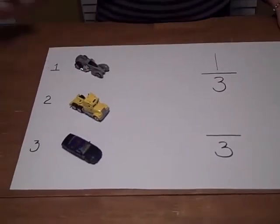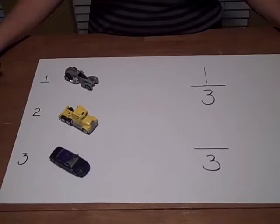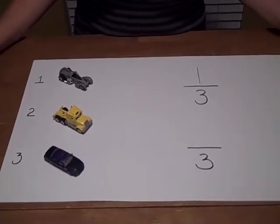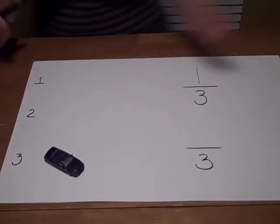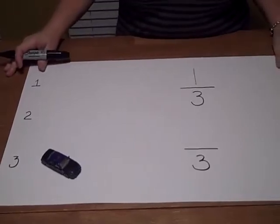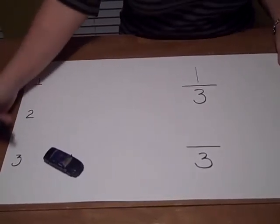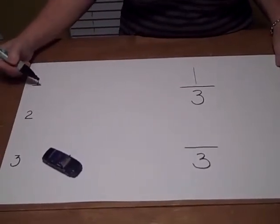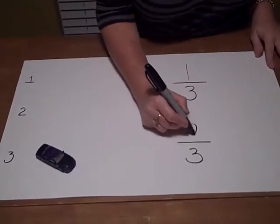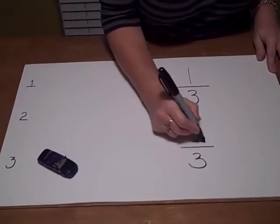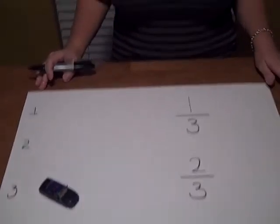Let's use another example. Let's say you had three cars but you lost two of them. What fraction of your cars are missing? You had three to start with — how many are missing? You're missing two-thirds of your cars.